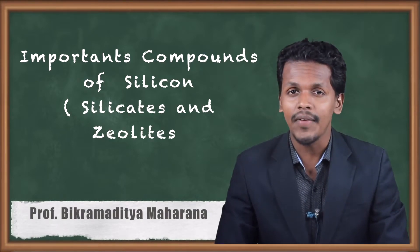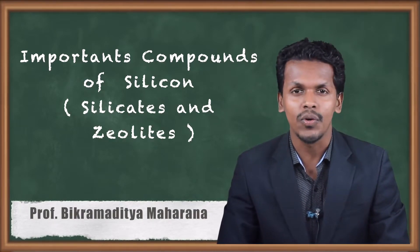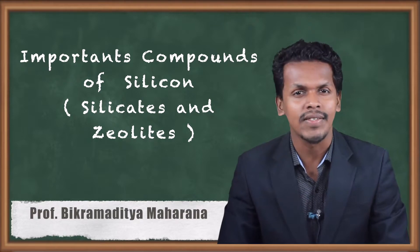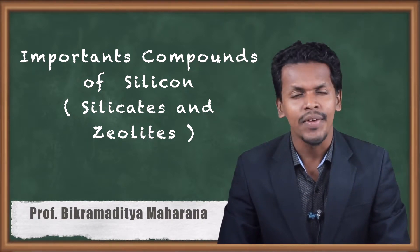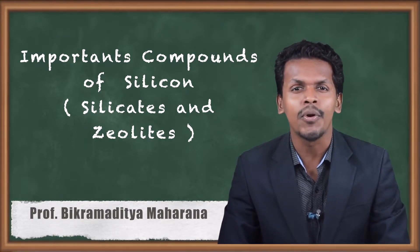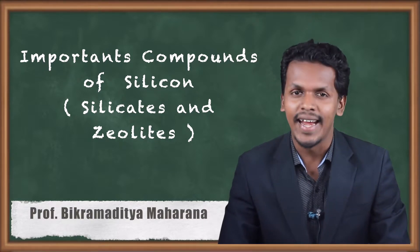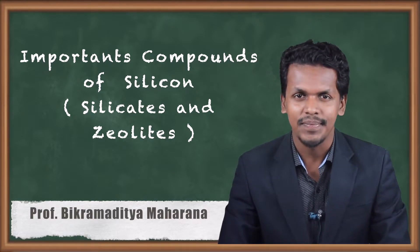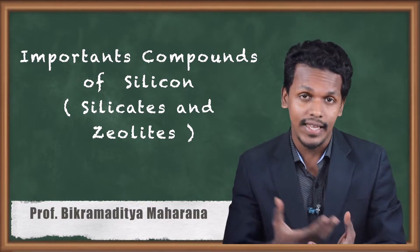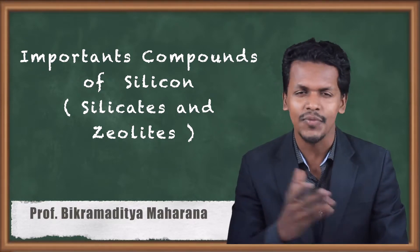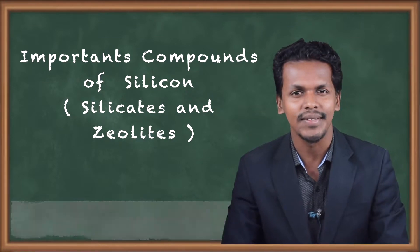Hi friends, in the previous lecture we have talked about the important components of silicon: silicon dioxide, silicon tetrachloride, and silicon. Now we are going to talk about the important components of silicon, that is silicate and zeolite — what they are, how and where they are obtained, and what are the uses of them.